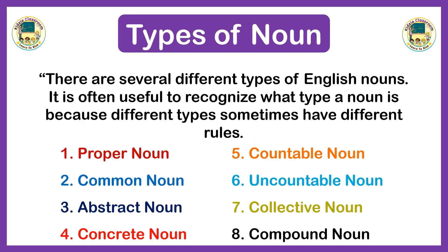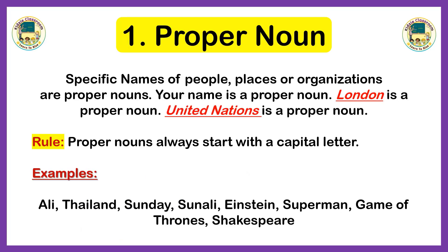These are examples of nouns. Now let's talk about types of nouns. There are several different types of English nouns. It is often useful to recognize what type a noun is, because different types sometimes have different roles. This video helps you to use them correctly. Generally, there are eight types of nouns: proper noun, common noun, abstract noun, concrete noun, countable noun, uncountable noun, collective noun, and compound noun. We will now discuss each type one by one.